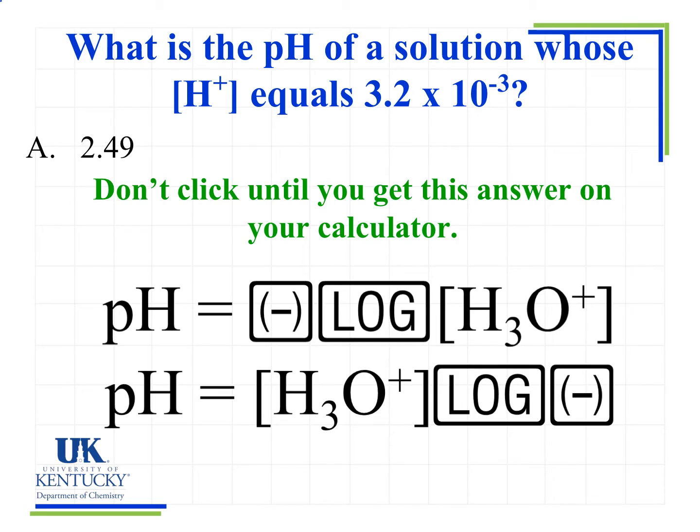What is the pH of a solution whose H-plus concentration equals 3.2 times 10 to the minus 3? You see that there's only one possible answer, so you know that's the correct answer. But I want you to try this on your calculator and make sure you can get to that answer before you click in.